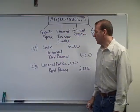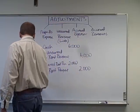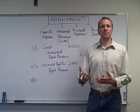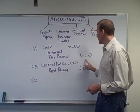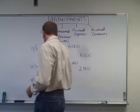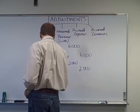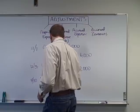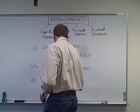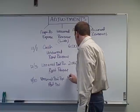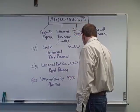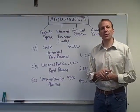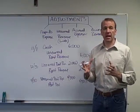We now have four more months remaining. On April 30th, they've been renting the space out, and we now get to recognize the remaining portion. It's going to be a similar entry — unearned rent revenue versus rent revenue for the remaining $4,000, because at April 30th, that's four months into the next year, and we've now earned the entire $6,000.